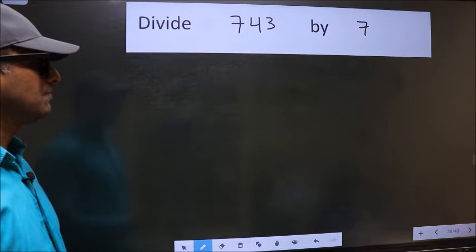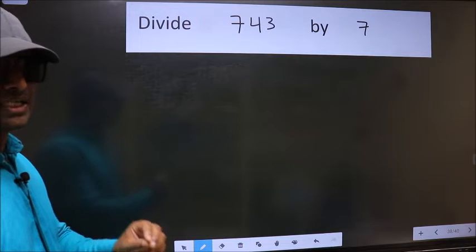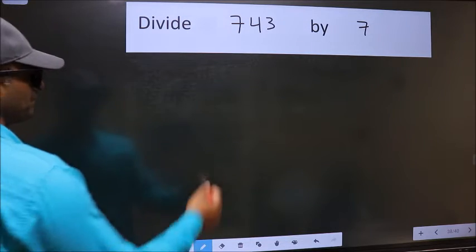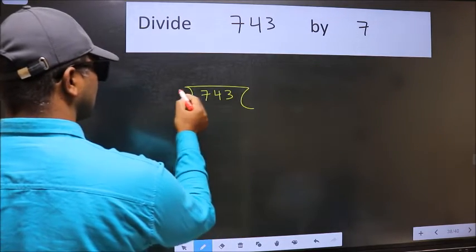Divide 743 by 7. To do this division, we should frame it in this way: 743 here and 7 here.